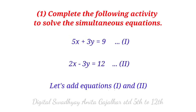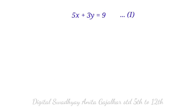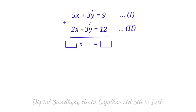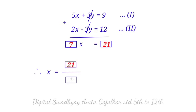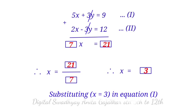Adding equations first and second: 5x plus 3y equal to 9, plus 2x minus 3y equal to 12 gives 7x equal to 21. Therefore x equal to 21 divided by 7, so x equal to 3. Substituting x equal to 3 in equation first.